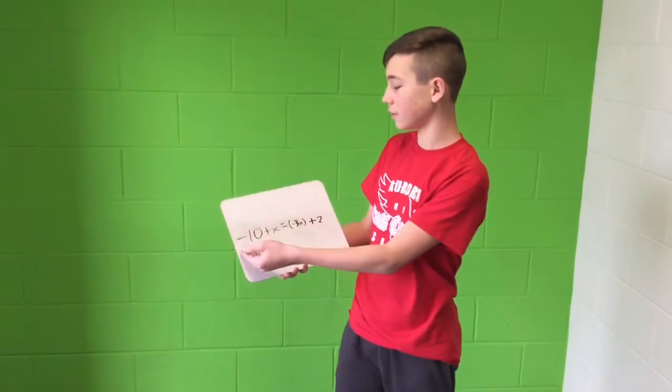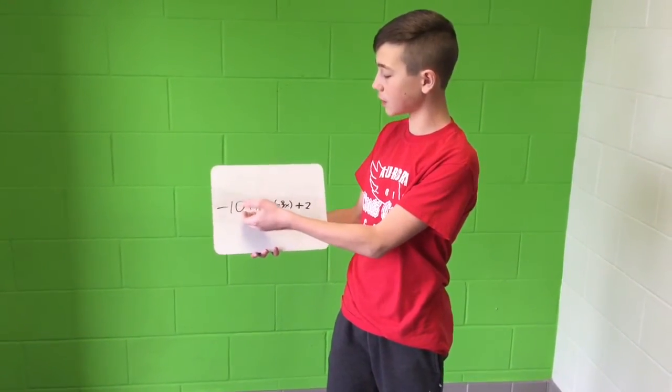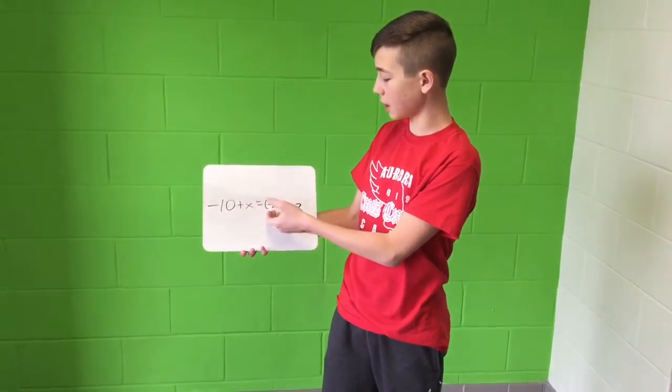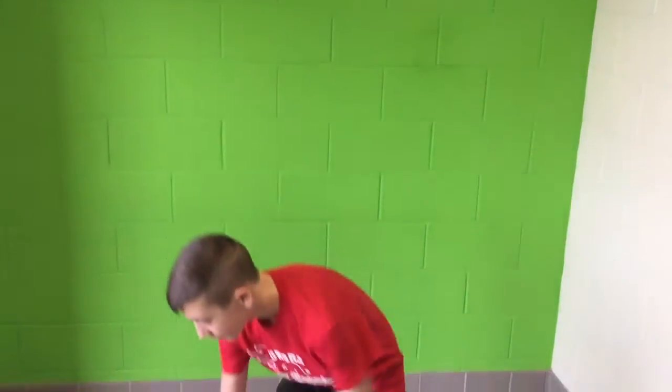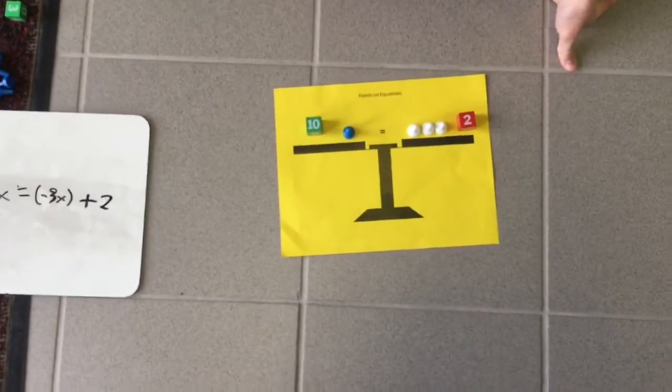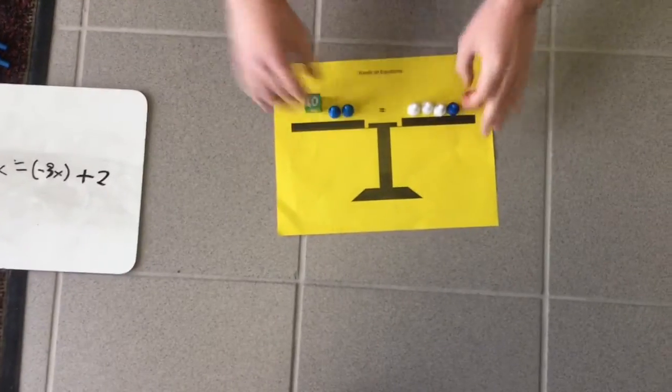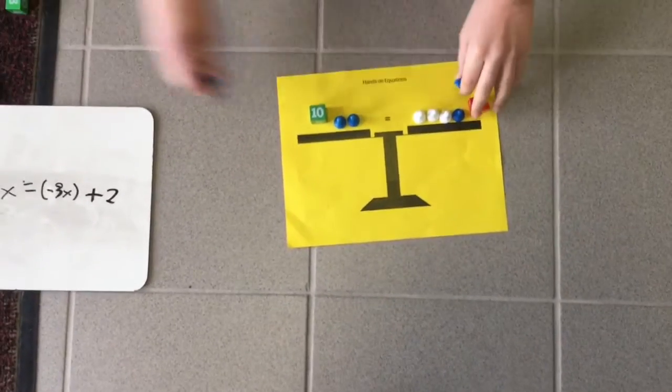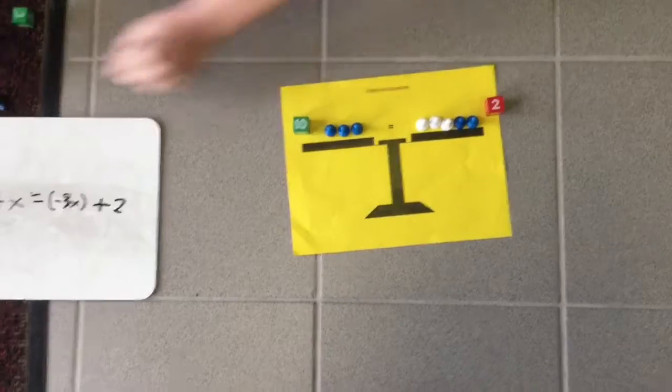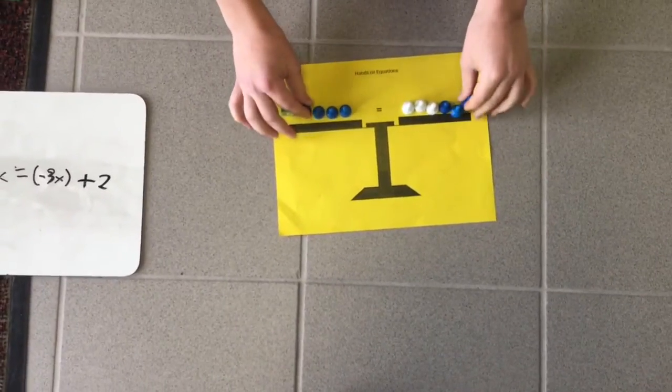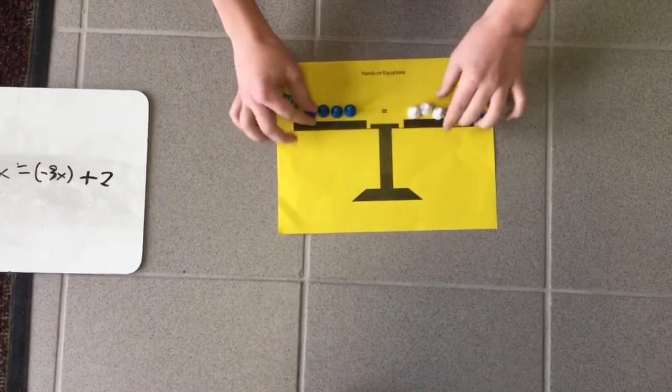For my next problem, you have negative 10 plus x equals negative 3x plus 2. First, you want to get rid of the negatives on this side, so you have to add blue pawns to each side. Add 3 to each side to get rid of all the negatives. You can get rid of these.